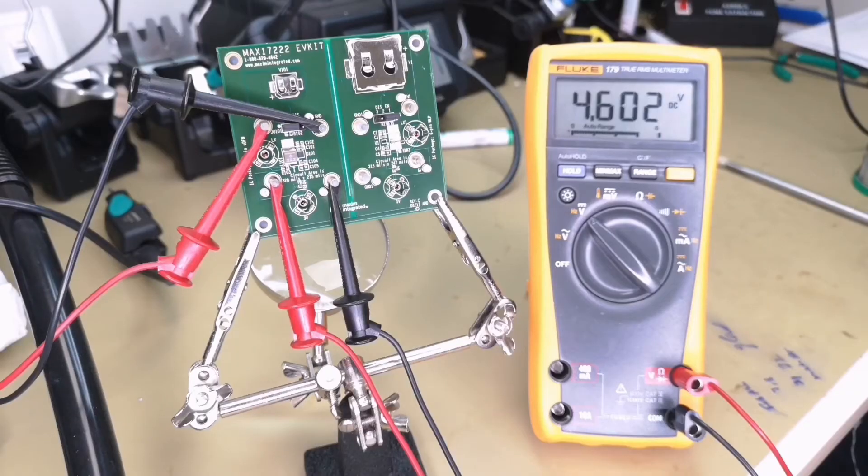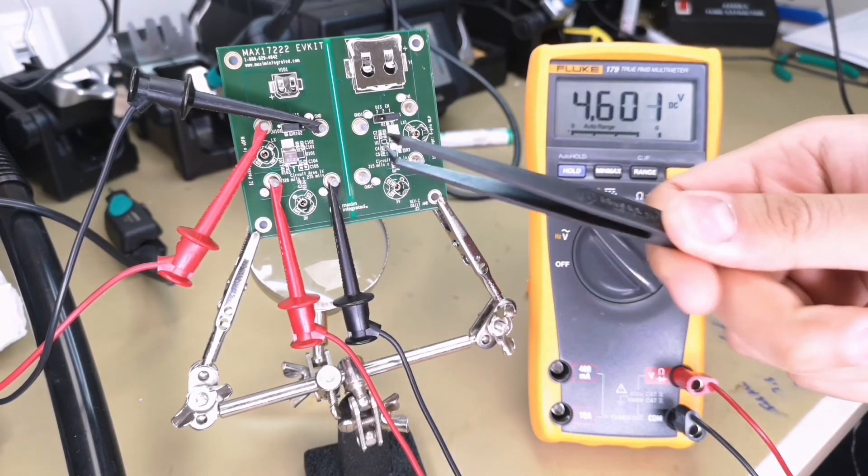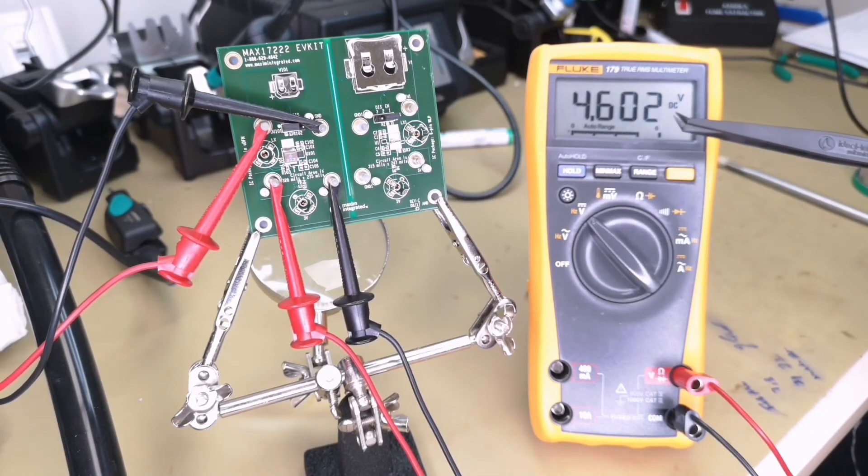After changing the R-select or R101 on the EVKit, we are trying to measure the output voltage and you can see that we have successfully configured the part for an output voltage of 4.6 volts.